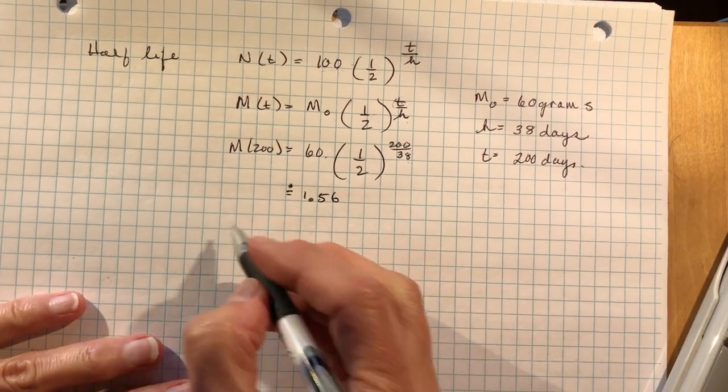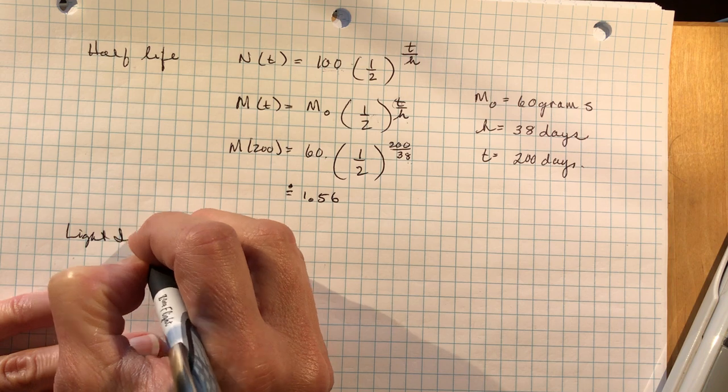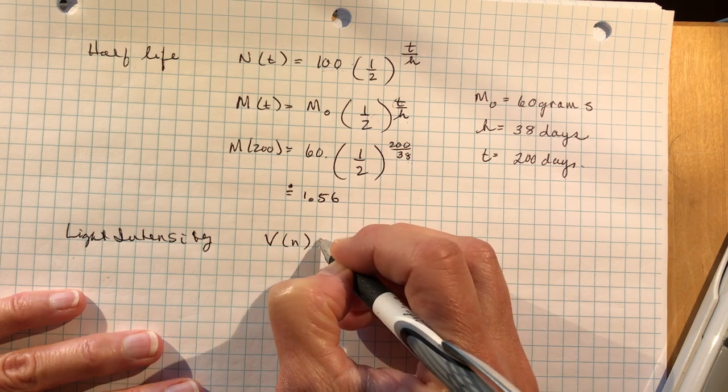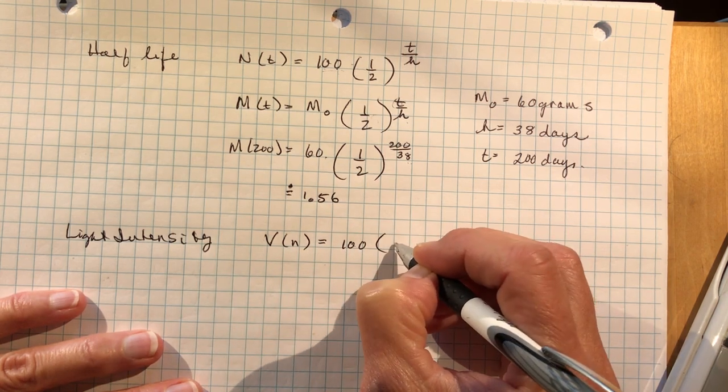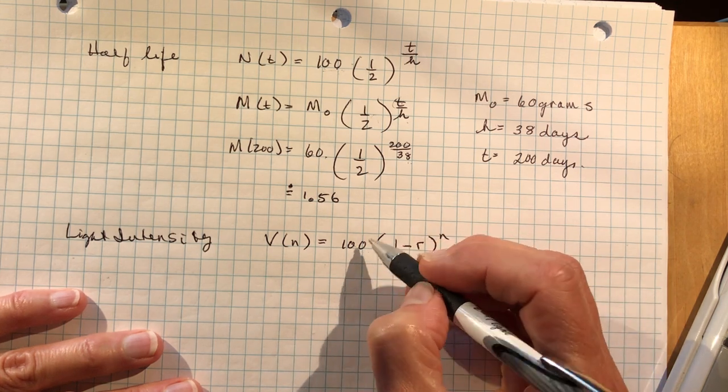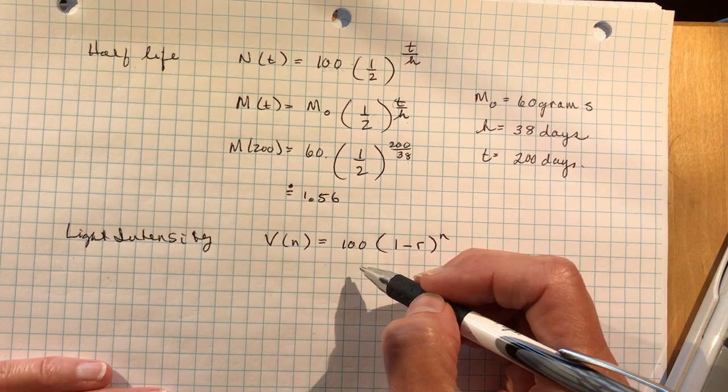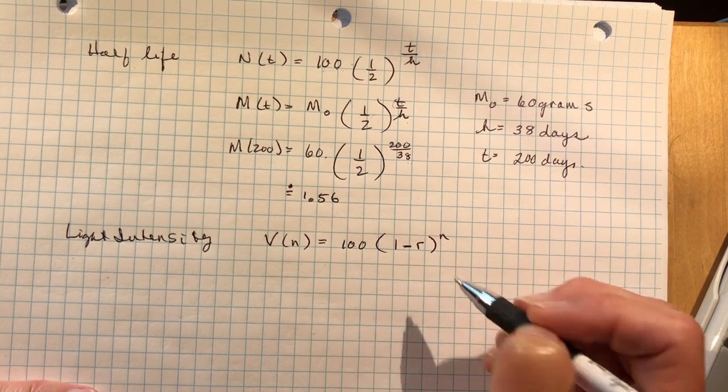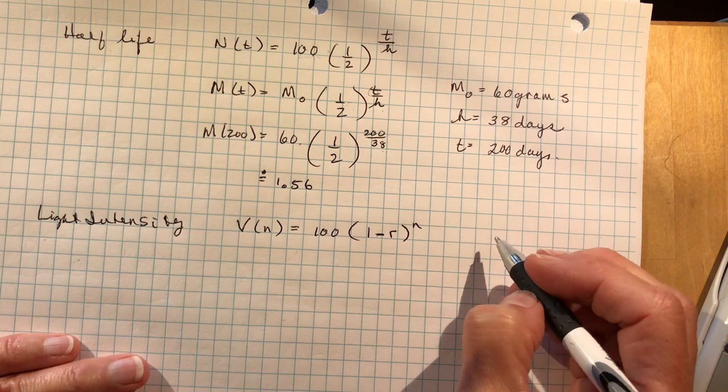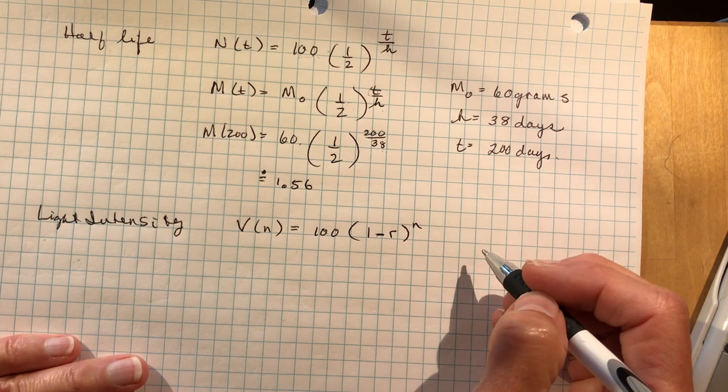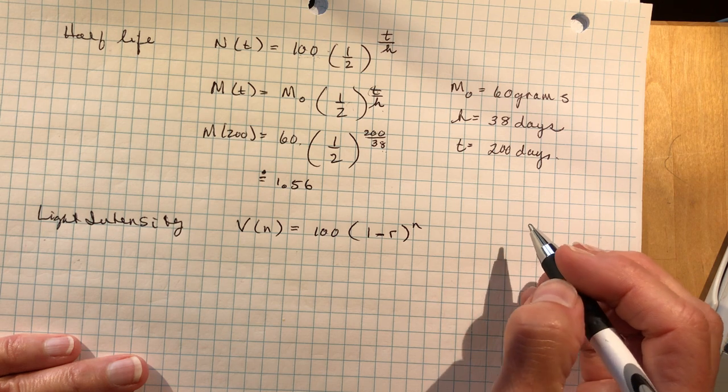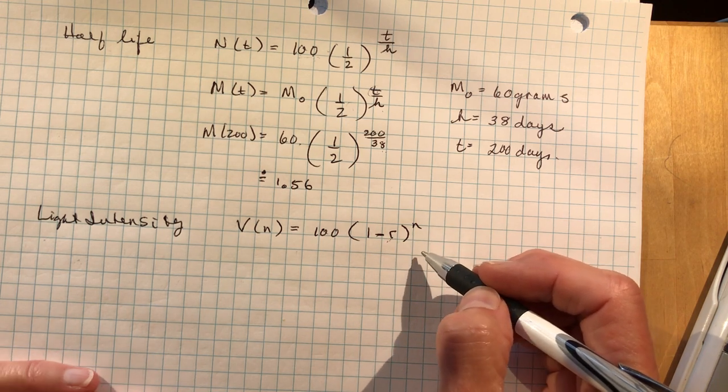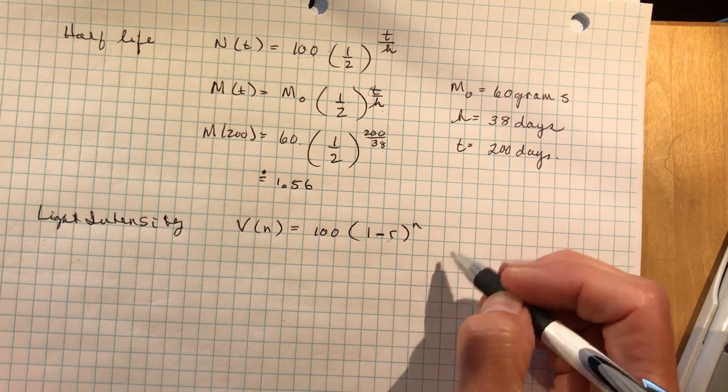The final one that your textbook uses is light intensity. And this talks about if you go underwater, what is the amount of light that is there as you go down. Now this makes much more sense to start with 100 because at the surface you have 100% of the light. As you go deeper and deeper into the water, the intensity of the light is decreased. So that's why we have a minus here. And there would be some kind of question saying that as you go down every 100 feet, you lose a certain percentage.